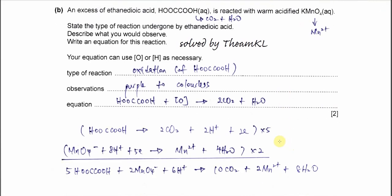Part B. An excess of ethane dioic acid — a dicarboxylic acid — reacts with warm acidified KMnO₄. This is an oxidation reaction. In the syllabus, two carboxylic acids can be oxidized: methanoic acid, which can be oxidized by Tollens' reagent, Fehling's reagent, or mild oxidizing agents to form CO₂ and H₂O; and ethane dioic acid, which can only be oxidized by acidified KMnO₄.